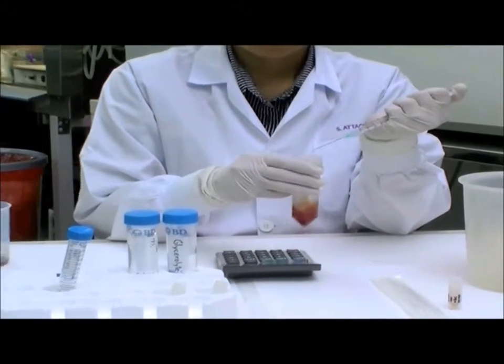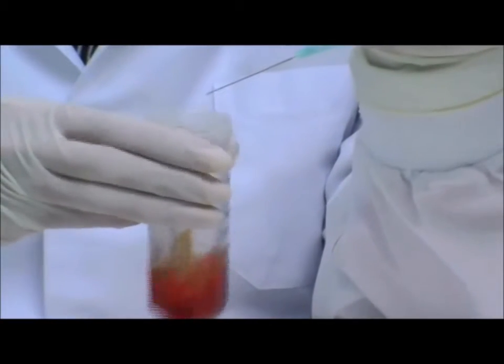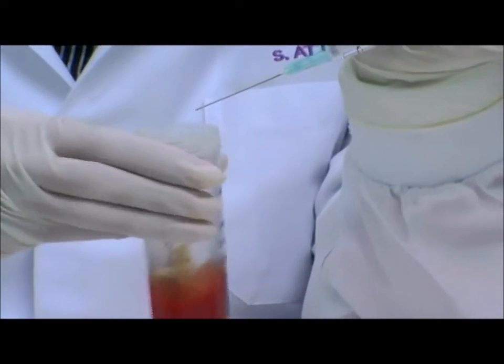Add the glycerolite to the packed red cells with continuous shaking. This part of the procedure must be performed slowly and should take 2 to 3 minutes.